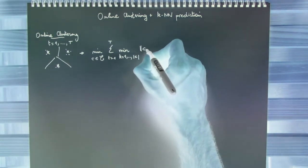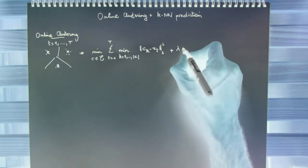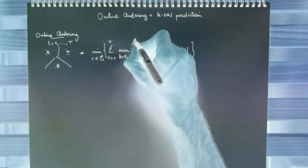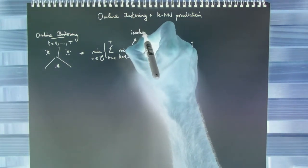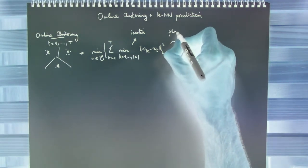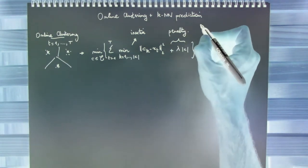This problem is well known and could be written as the following optimization problem, where the loss function, called inertia, is based on Euclidean distance, and we add a penalty based on the number of clusters.